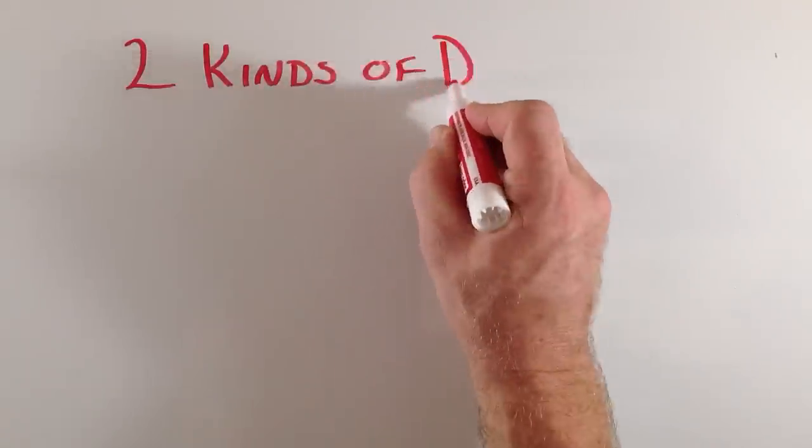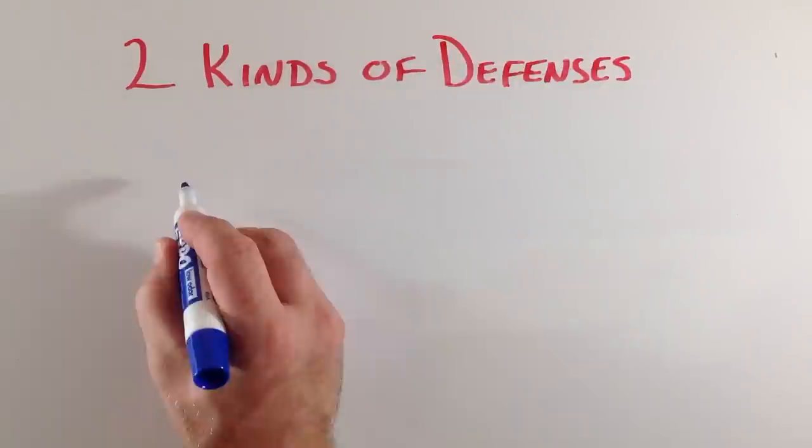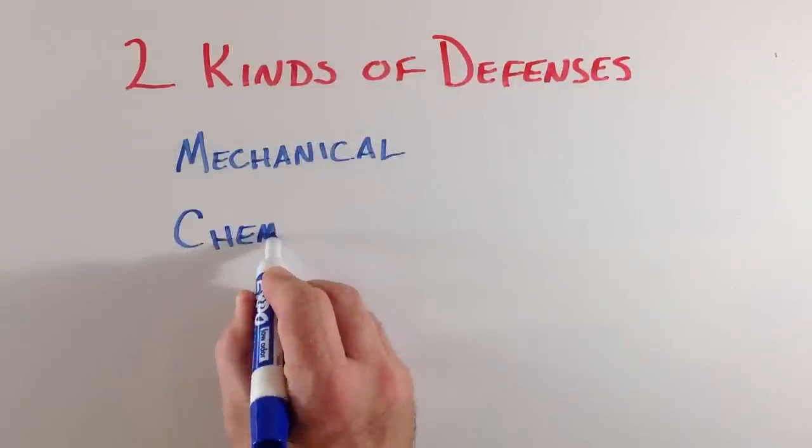Consequently, plants have evolved two general categories of defenses against herbivores. One is mechanical defenses. The second is chemical defenses.